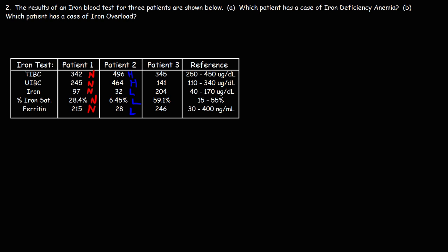Now for patient 3, the TIBC levels are normal, and the same is true for the UIBC level. Now the serum iron level is high, it's above 170. And the percent iron saturation is also high. But the ferritin levels are normal.